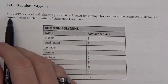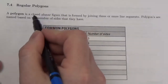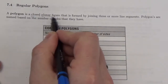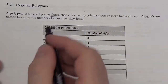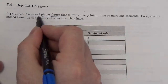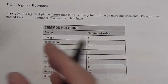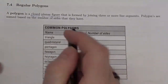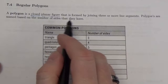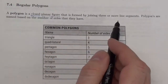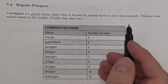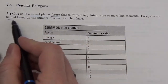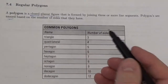Let's back that up a little bit. A polygon, remember, is a closed planar figure. It's closed, meaning that there's an inside and an outside, and it's planar — it's on a flat piece of paper. They can be formed by joining three or more line segments, and we name them usually based on the number of sides that they've got.